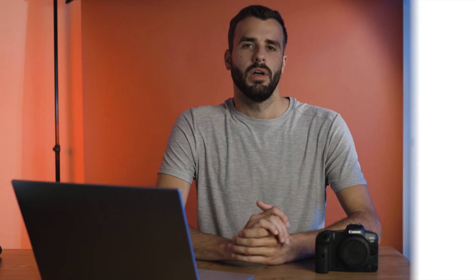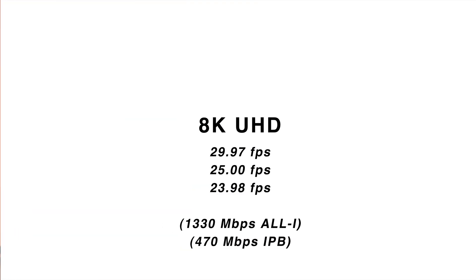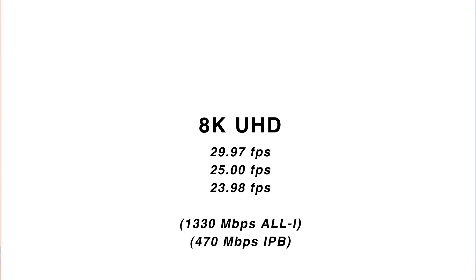Now here is the kind of weird part. Let's talk about 8K UHD. You can shoot in this mode at 23.98, 25, or 29.98 frames per second. When you're in UHD mode, you can do All-I or IPB, but there is no RAW option in UHD.